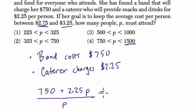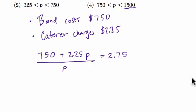And if I want to keep it at $2.75, I solve this equation. I do that by multiplying both sides by P, and that gets me $750 plus $2.25P equals $2.75P.